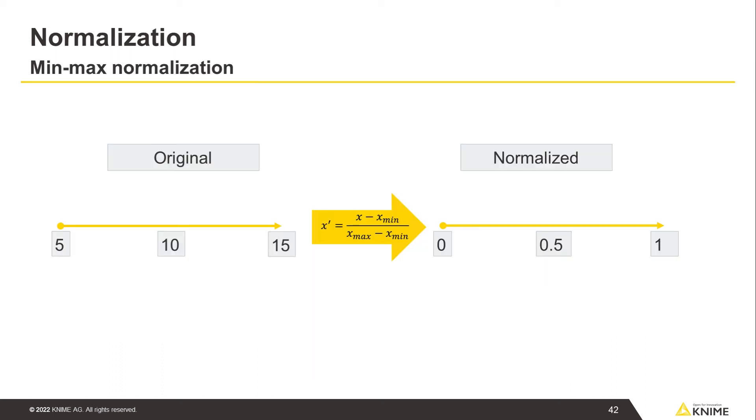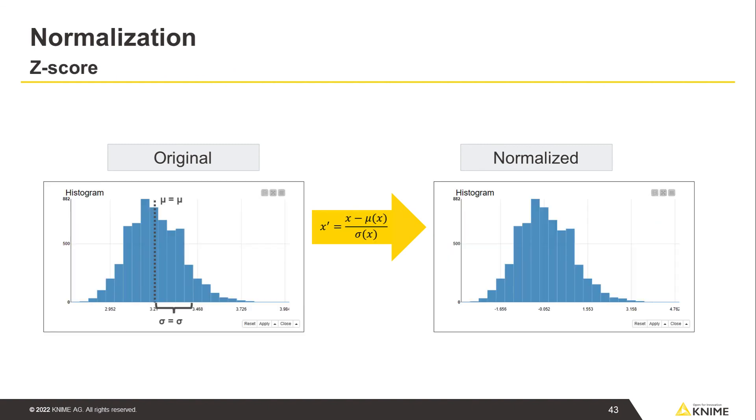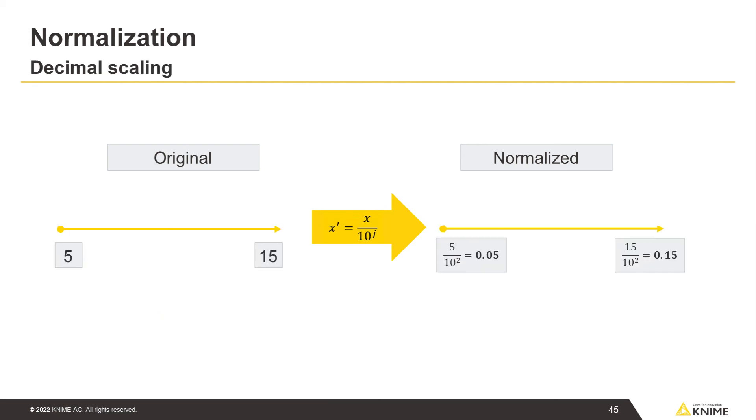MinMax, a linear transformation of the data from the original range into a new selected range, such as 0 and 1. Z-score, a linear transformation of the data from the original distribution into a normal Gaussian distribution with mean 0 and standard deviation 1. Decimal scaling, a non-linear transformation of the data obtained by recursively dividing the data values by 10 until all values fit into the range negative 1 to 1.